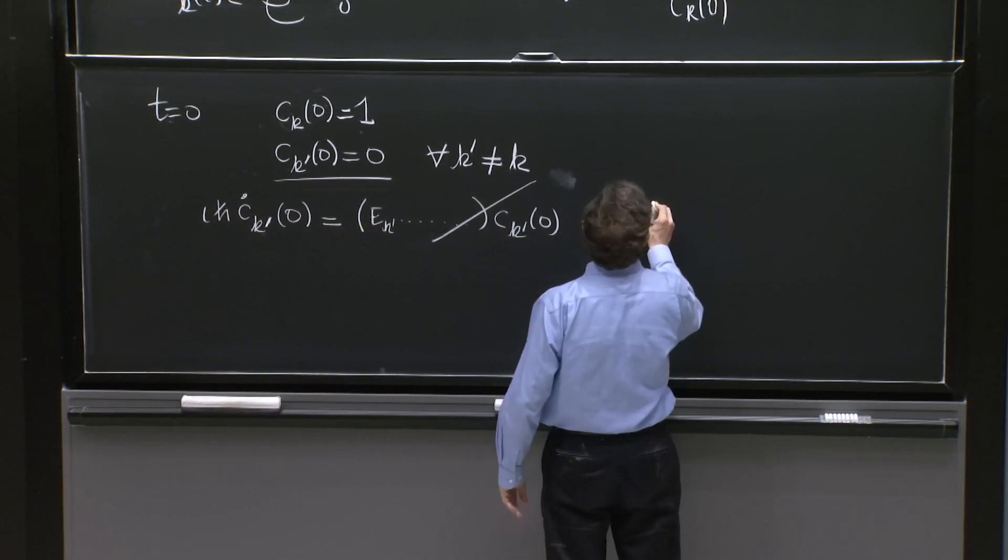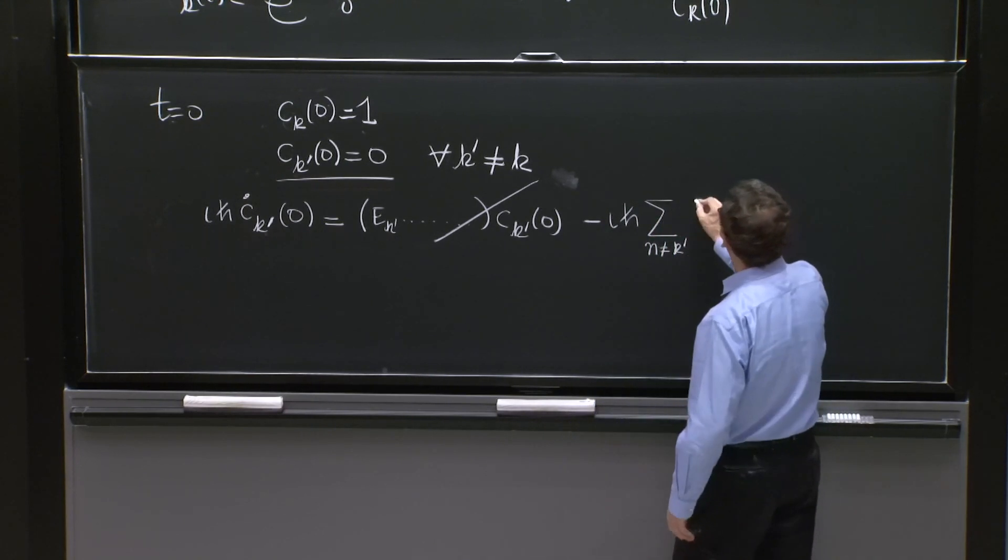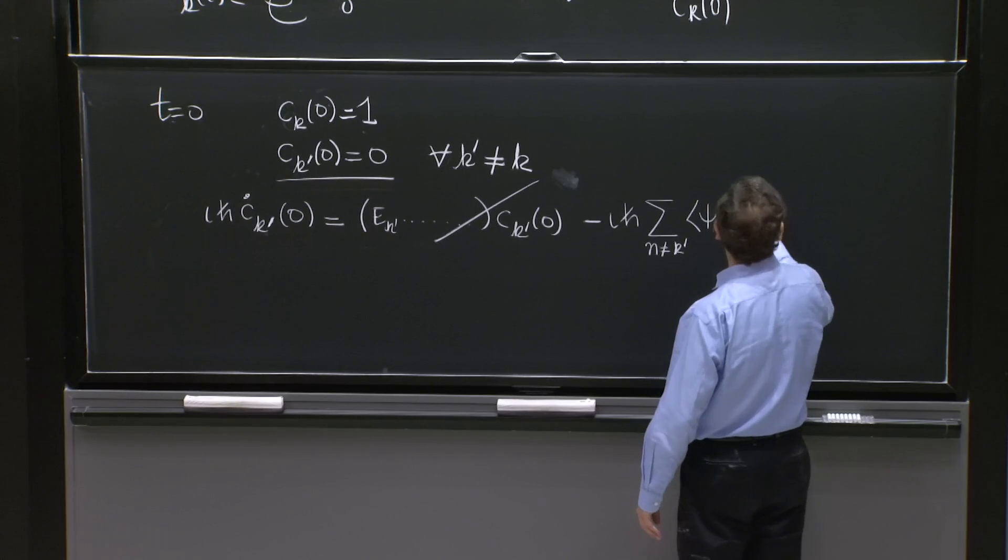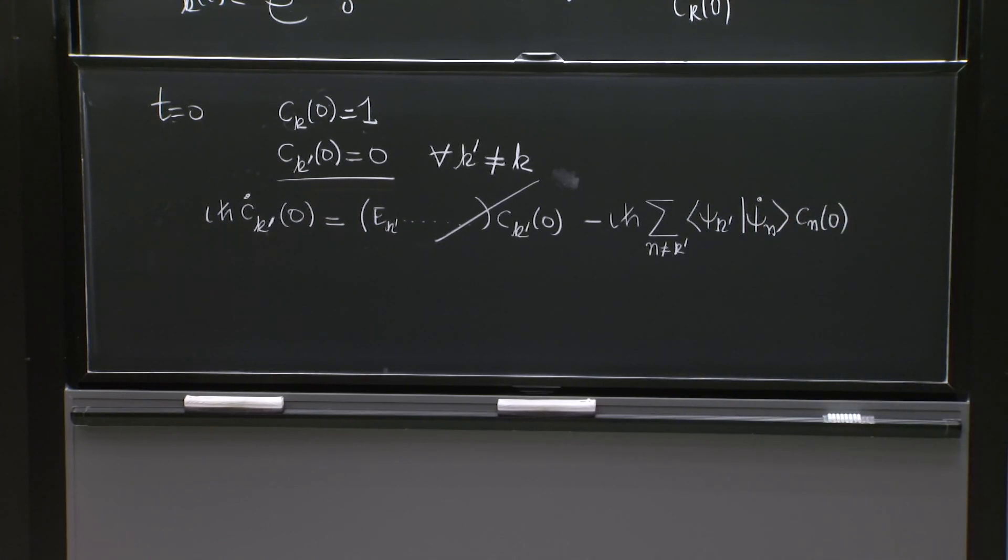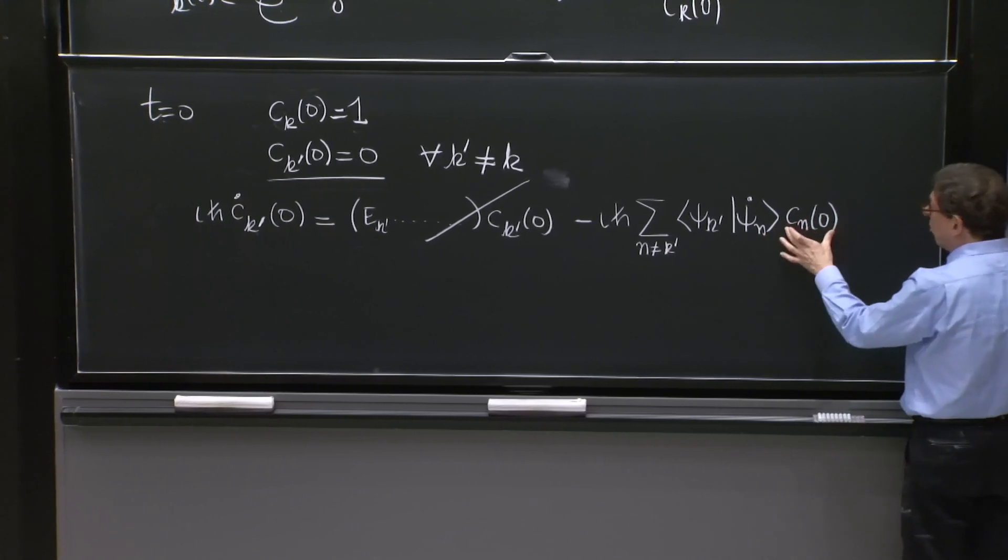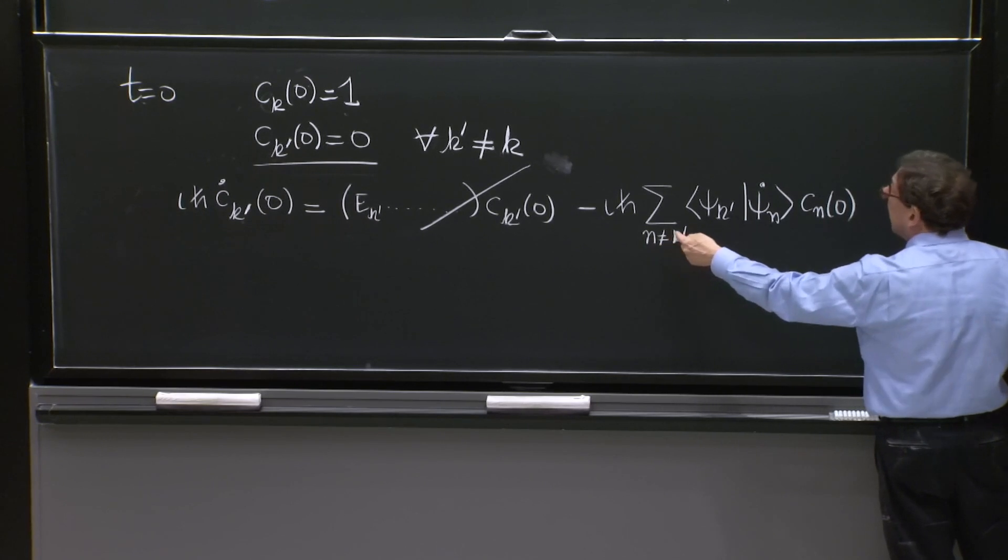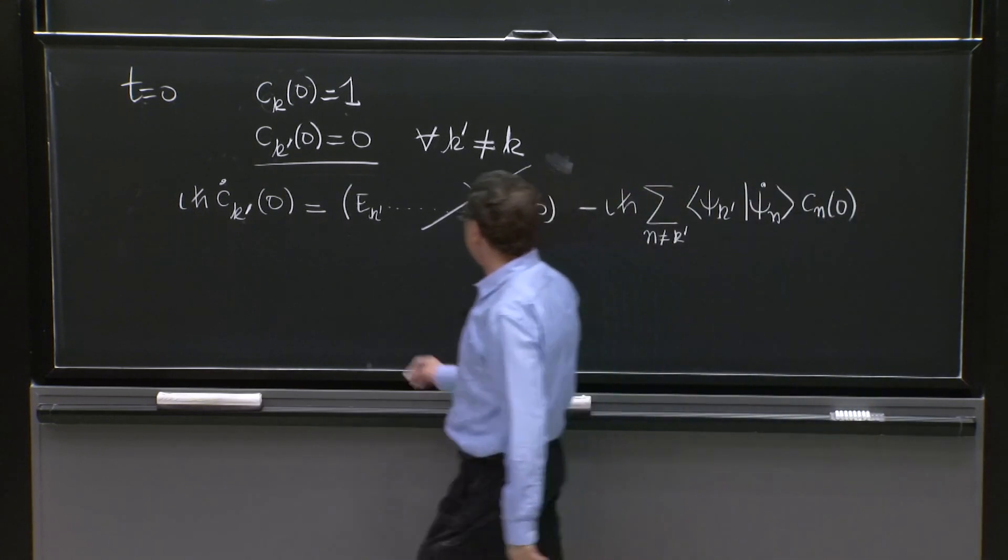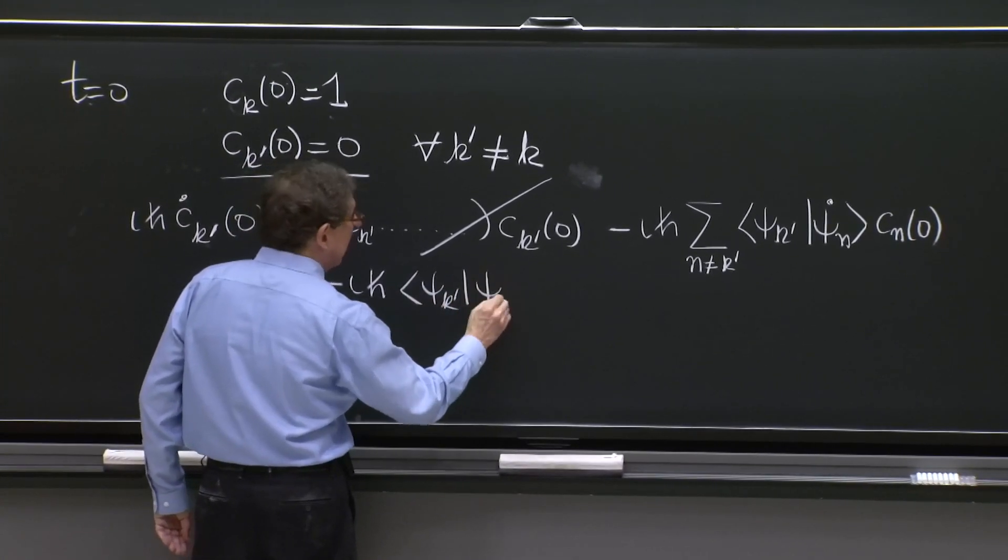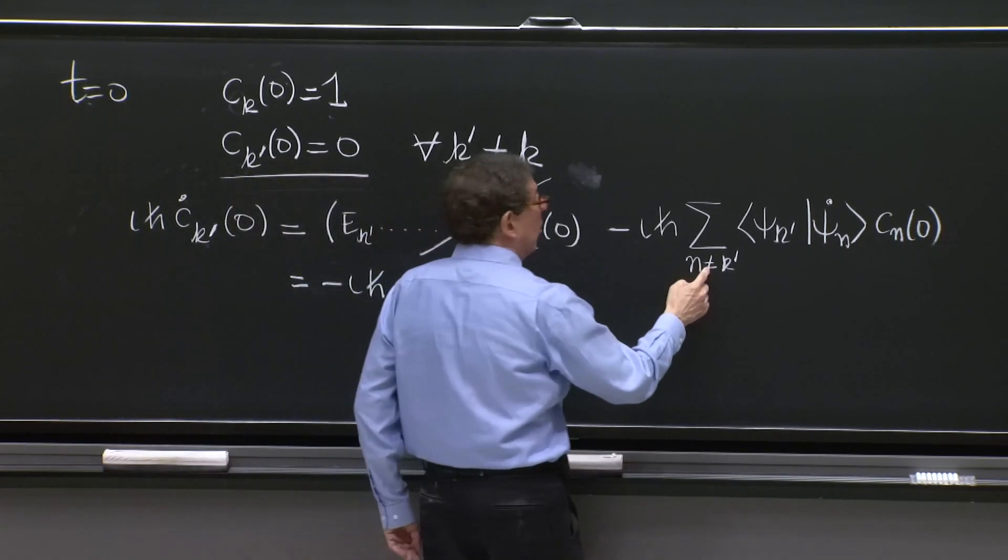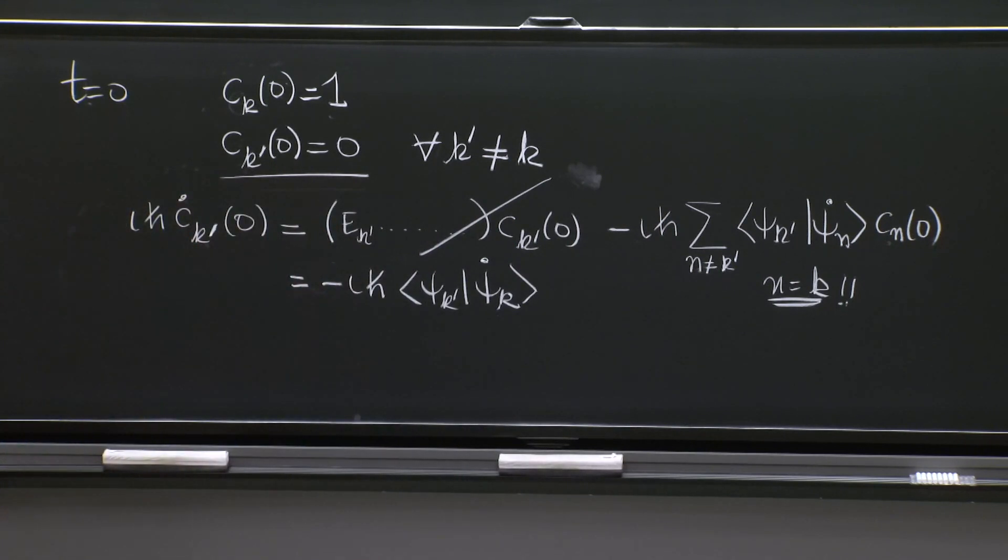But from the last term, what would we get? Minus i h bar sum over n different from k prime of psi k prime psi n dot c n at time equals 0. And here, the only one that is different from 0 at time equals 0 is c k. So when n is equal to k is allowed, because we said k prime is different from k. So there is one term here: minus i h bar psi k prime psi k dot. Only when n equals to k you get something here, because this is the only term that exists and it's equal to 1.